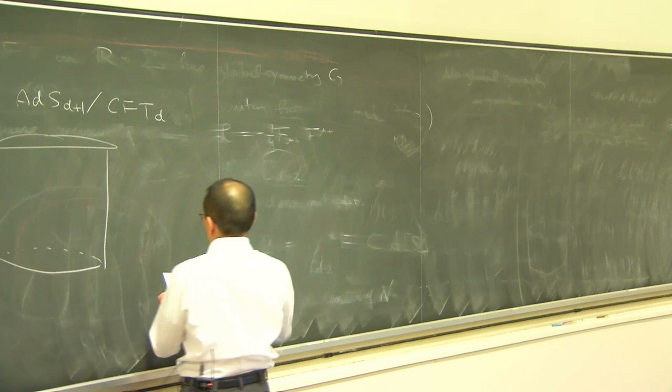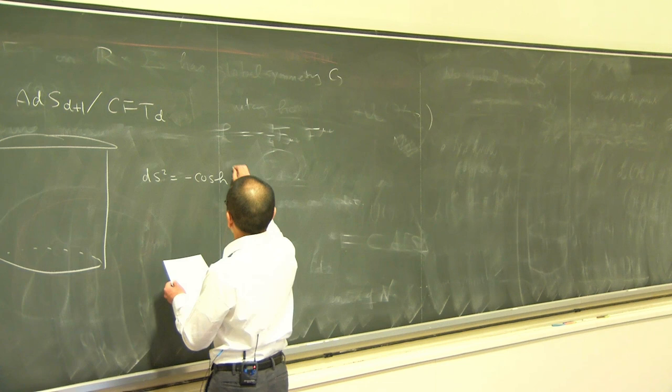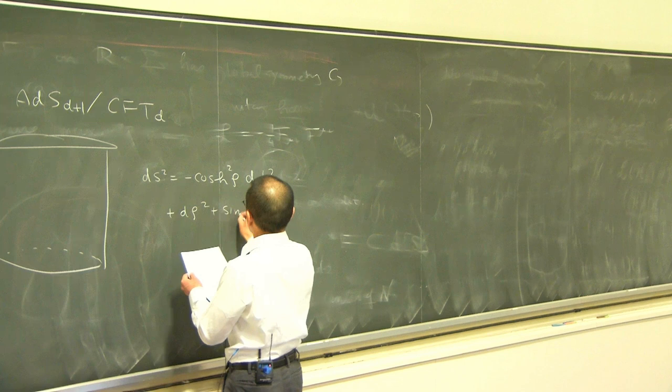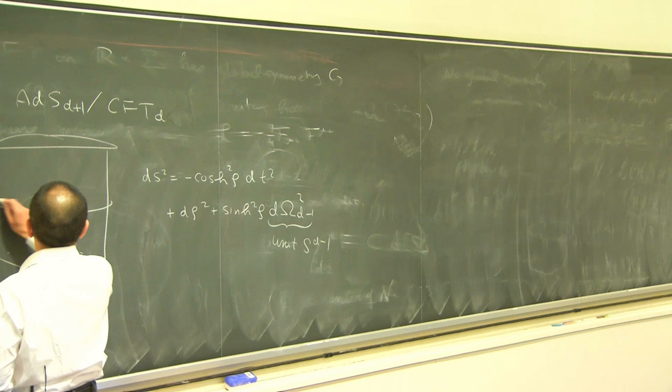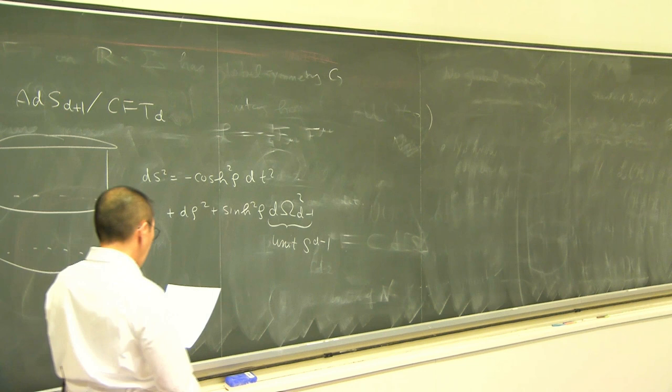We use, for example, the global coordinate, where this is a metric for the unit (D minus 1)-dimensional sphere, which is a sphere on the boundary of anti-de Sitter space. We consider the Klein-Gordon equation.